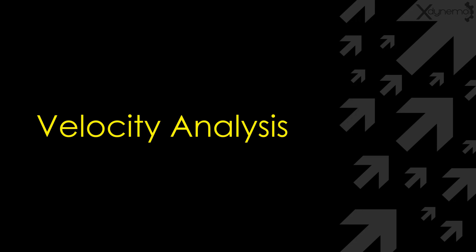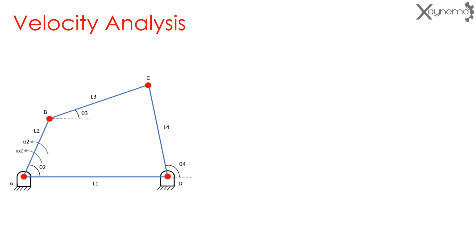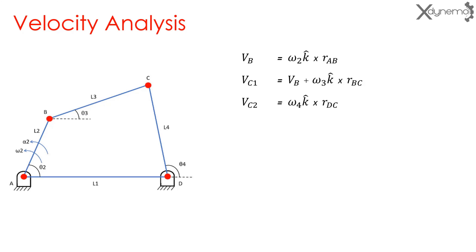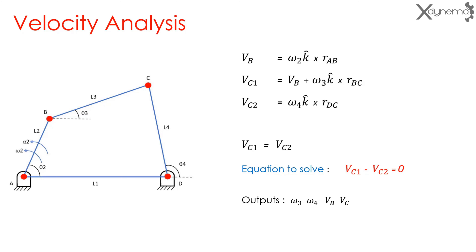Now we will discuss velocity analysis. The relative velocity of a rotating link is the cross product of angular velocity omega and the position vector. Velocity of point B equals omega 2k cross RAB. Velocity of point C is VB plus omega 3k cross RBC. Also, the velocity VC equals omega 4k cross RDC. As VC1 and VC2 both represent the velocity of point C, VC1 equals VC2. Therefore, solving VC1 minus VC2 equals 0 provides the values of angular velocities omega 3 and omega 4. The outputs of velocity analysis are omega 3, omega 4, VB, and VC.